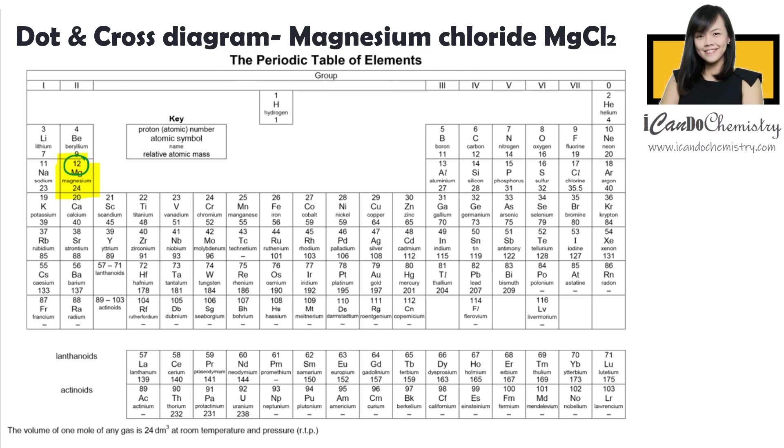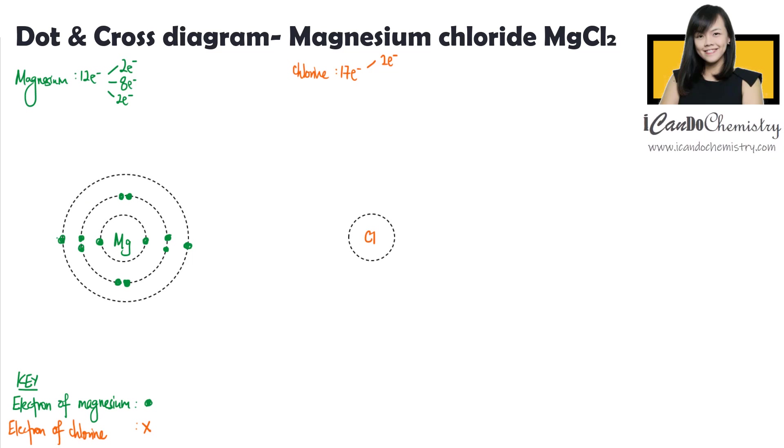Now the non-metal in this compound is chlorine. It is here in the periodic table. Chlorine has 17 electrons. Let's use crosses to represent the electrons of chlorine. The first shell holds two, second shell holds eight. It has seven electrons in the third shell. Chlorine needs one more electron to achieve the octet configuration.